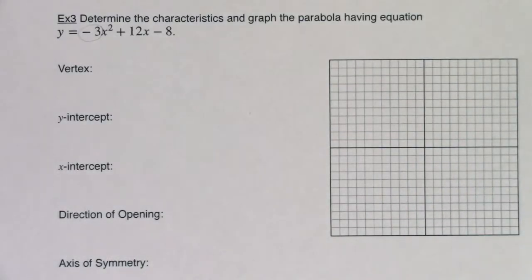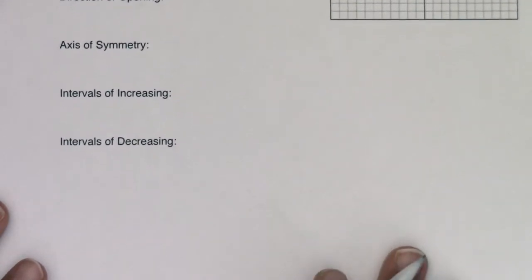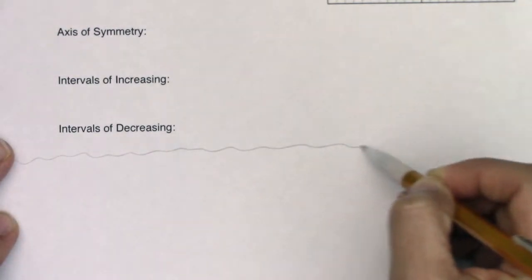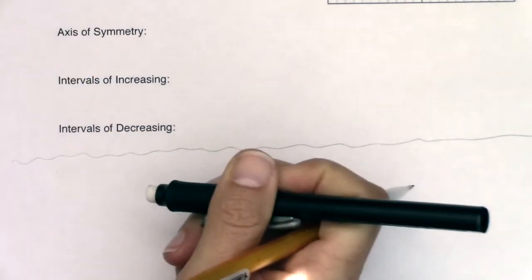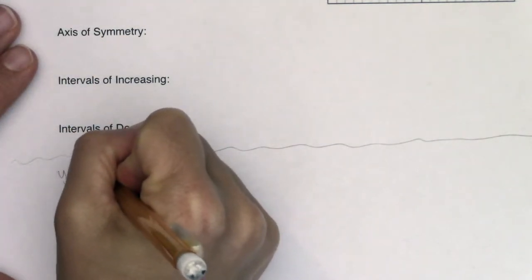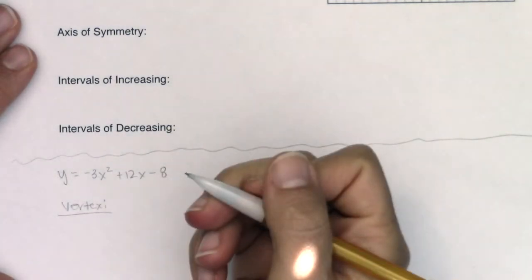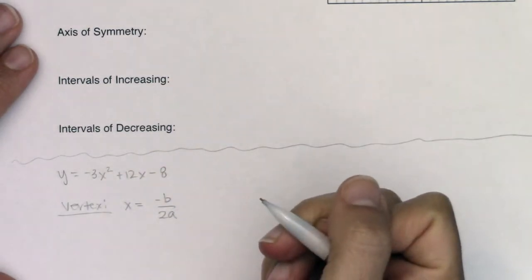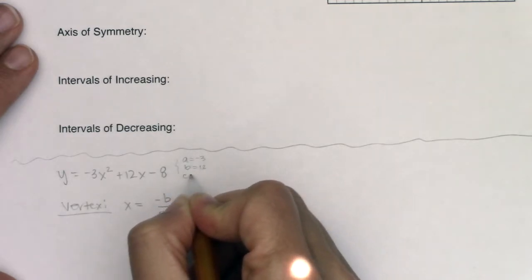Let me write the equation of my parabola: negative 3x squared plus 12x minus 8, and I'd like to find the vertex. To find that x-coordinate, I need to use the ratio negative b over 2a. From this parabola, I can see that a is equal to negative 3, b is equal to positive 12, and c is equal to negative 8.